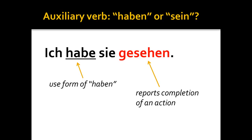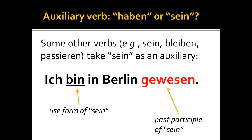That being said, there are a few small exceptions. Some verbs like 'sein' itself, 'bleiben' — to remain — or 'passieren' — to happen — automatically take 'sein' as an auxiliary verb. So the sentence on the screen, 'Ich bin in Berlin gewesen' — 'I was in Berlin' — uses 'gewesen,' the past participle of 'sein.' Since it is the past participle of 'sein,' I use a form of 'sein' as the auxiliary verb in the second position: 'Ich bin in Berlin gewesen.'